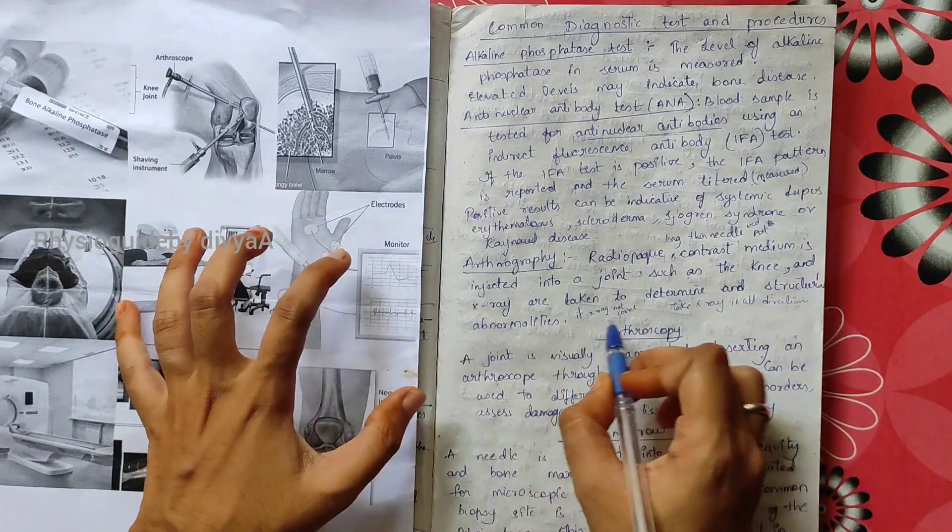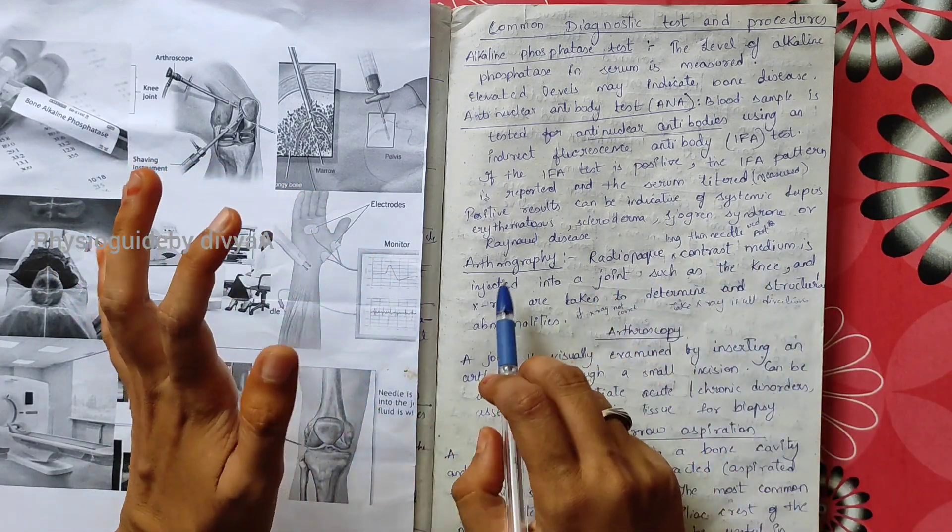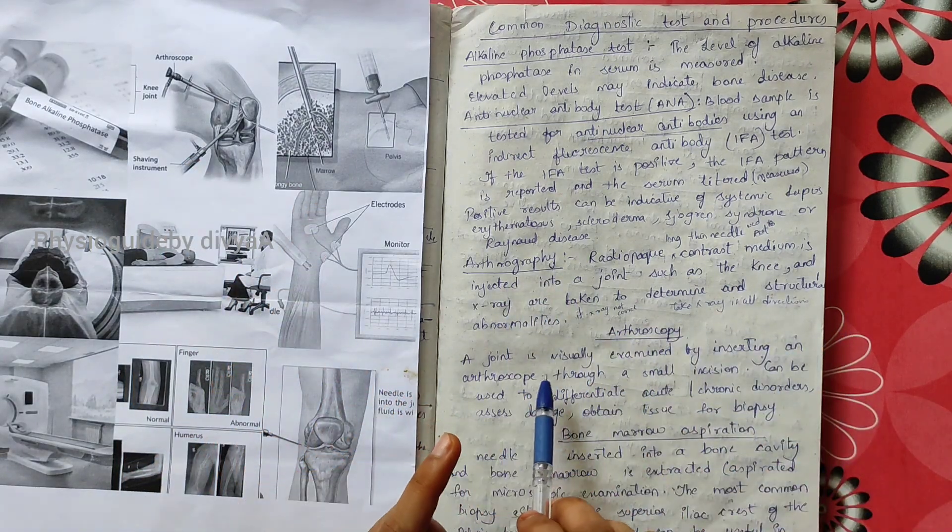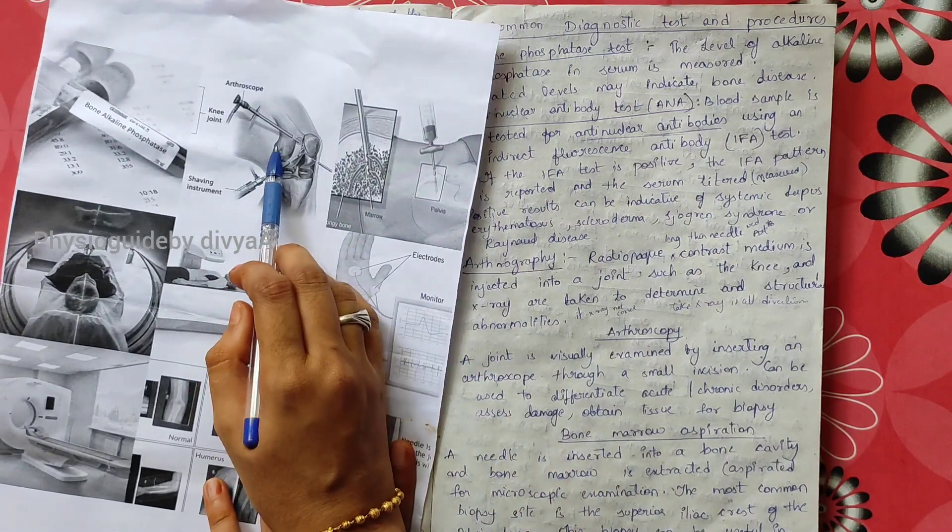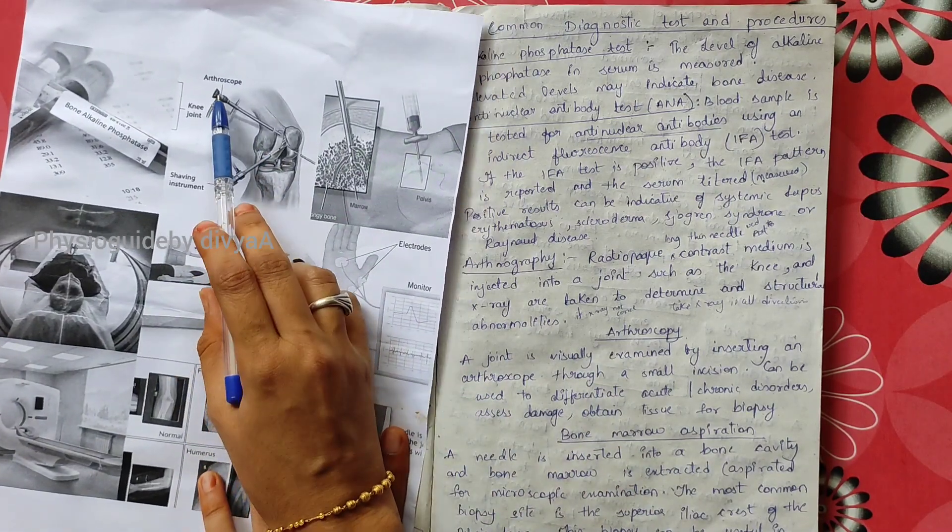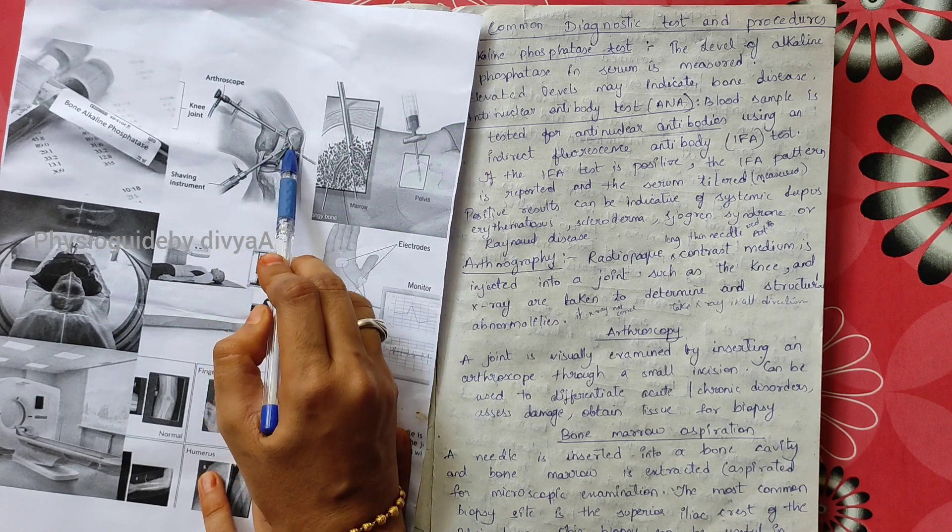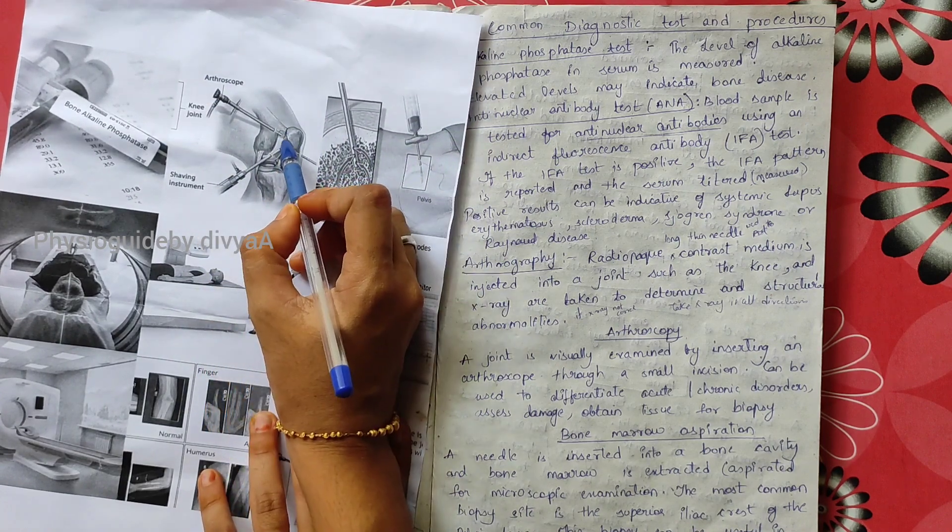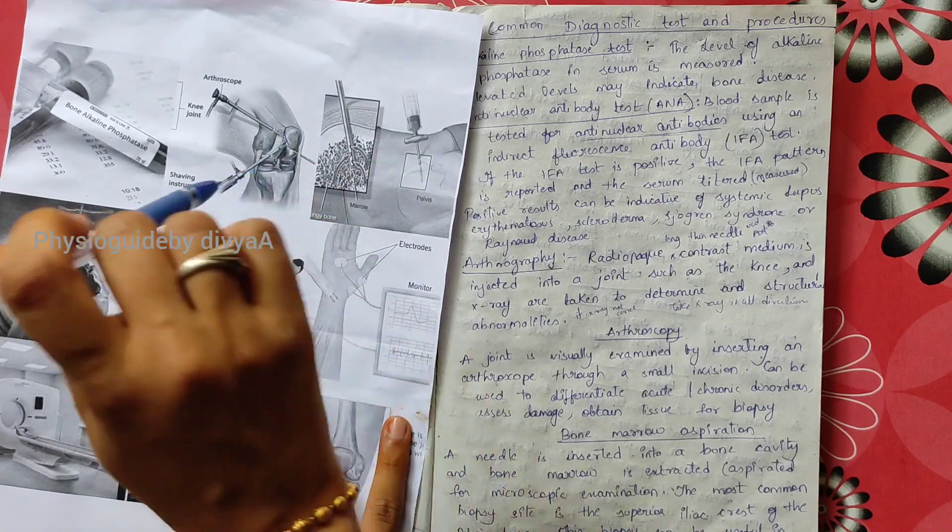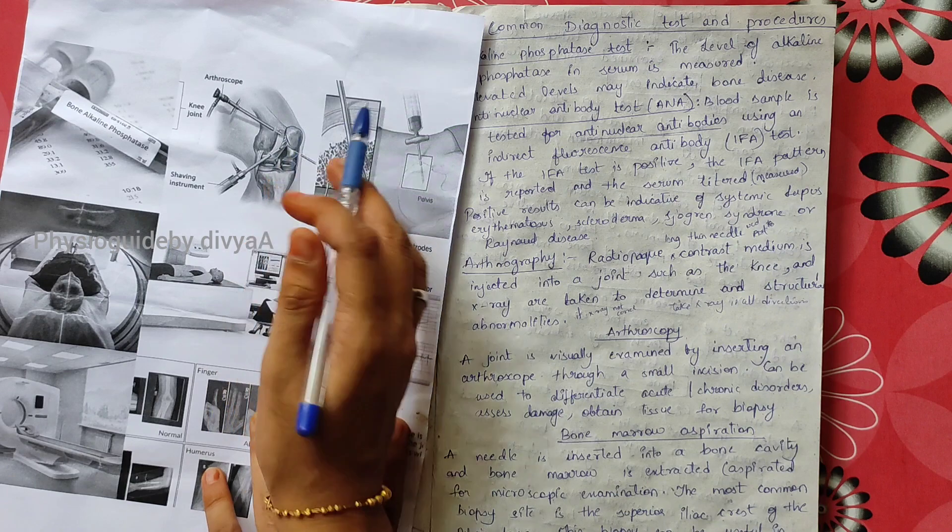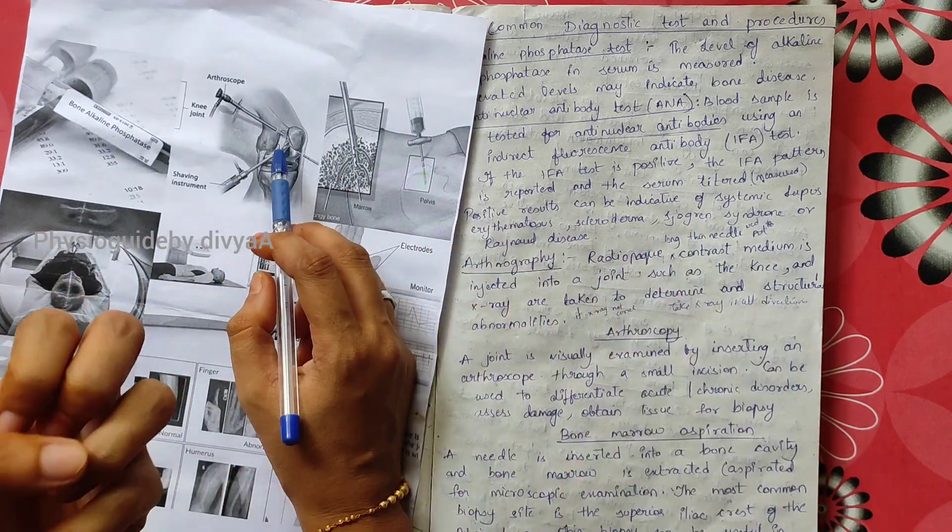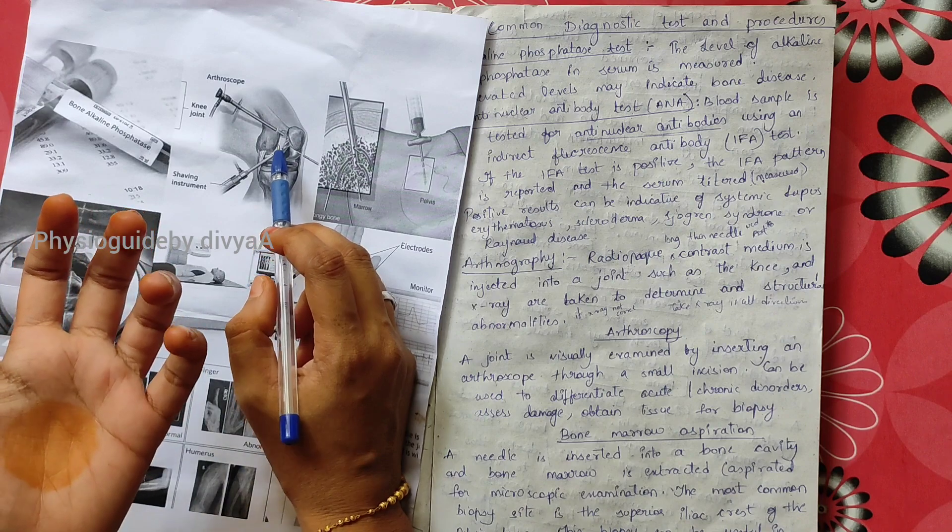Arthroscopy: the joint is visually examined by inserting an arthroscope with a camera fixed inside, monitored through a small incision. This can differentiate acute and chronic disorders, see the damage, and obtain tissue for biopsy.